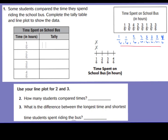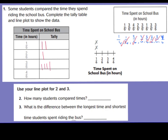I have two students that rode the bus for 1/6 of an hour. If you think about time cut into 60 minutes, 1/6 of 60 minutes equals 10 minutes. Next, I have one student that rode the bus for 2/6 of an hour, also known as 20 minutes. I have four students that rode the bus for 3/6 of an hour, also called 1/2 of an hour because we can simplify 3/6. And last but not least, only one child rode the bus for 4/6 of an hour, also known as 40 minutes.